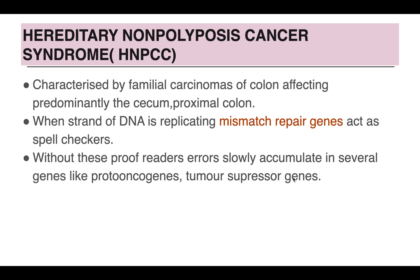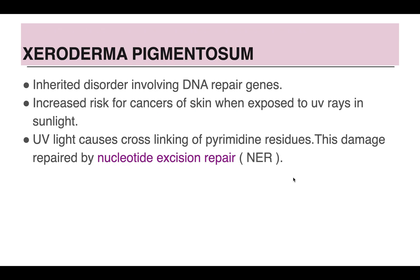Two syndromes briefly: HNPCC — hereditary non-polyposis colon cancer syndrome — features many familial carcinomas of the colon, especially the cecum and proximal colon. There is a problem in the mismatch repair gene and the proofreaders cannot work properly, leading to carcinomas. In xeroderma pigmentosum, there is a problem in nucleotide excision repair, leading to development of skin cancers.